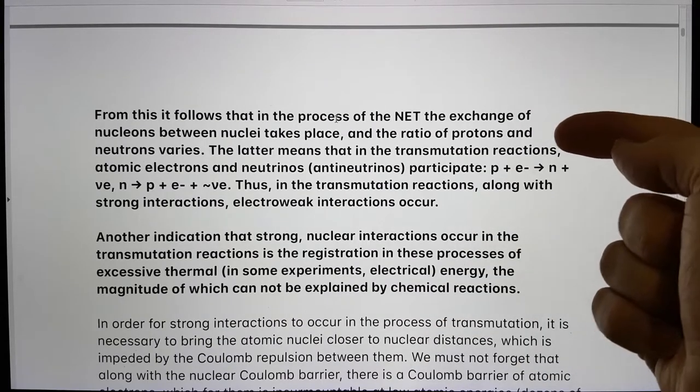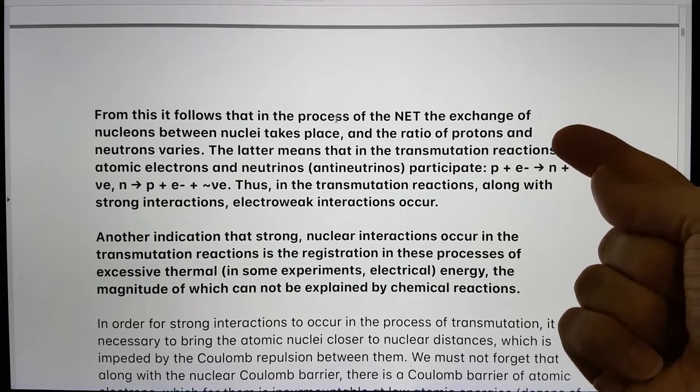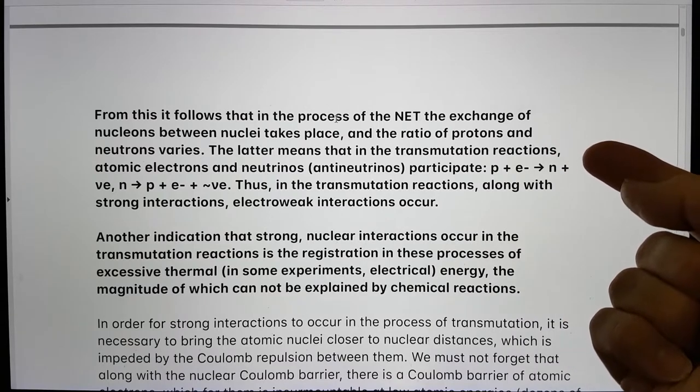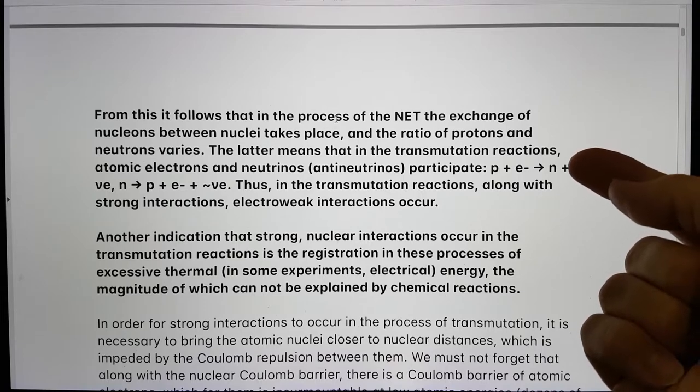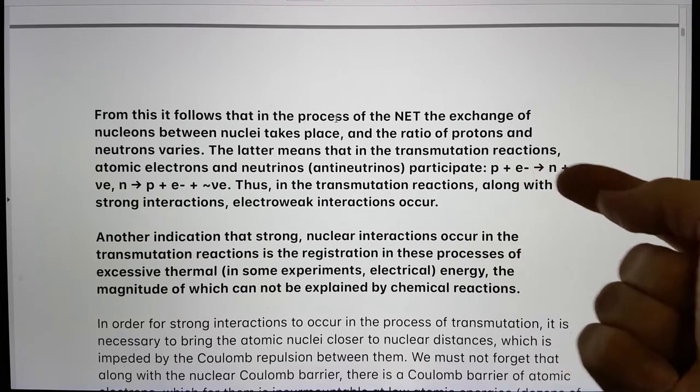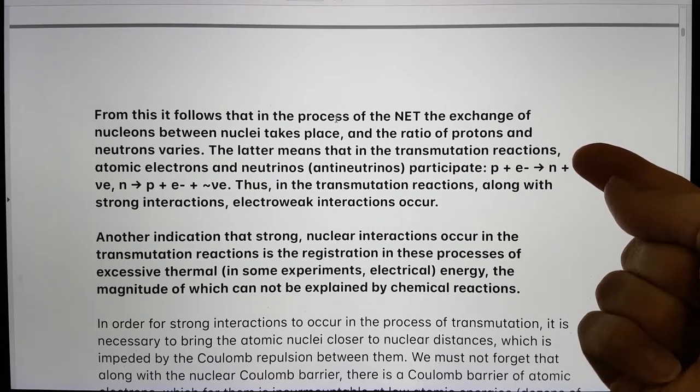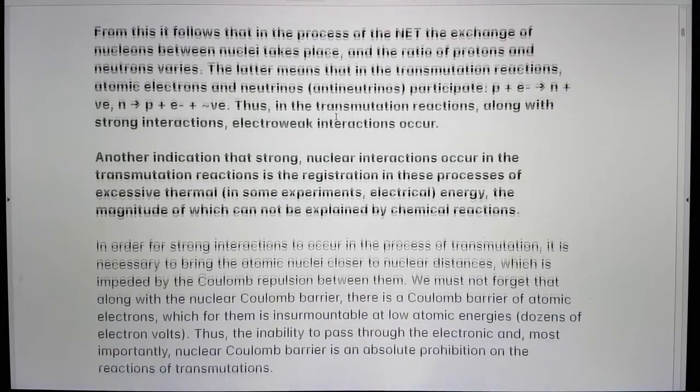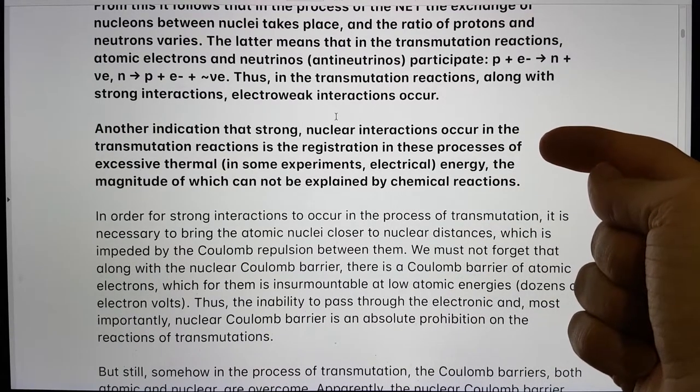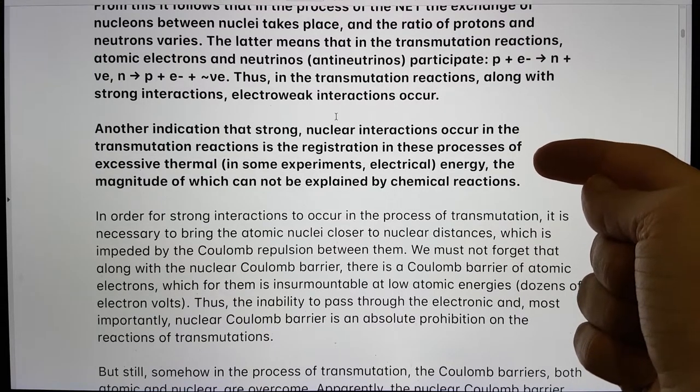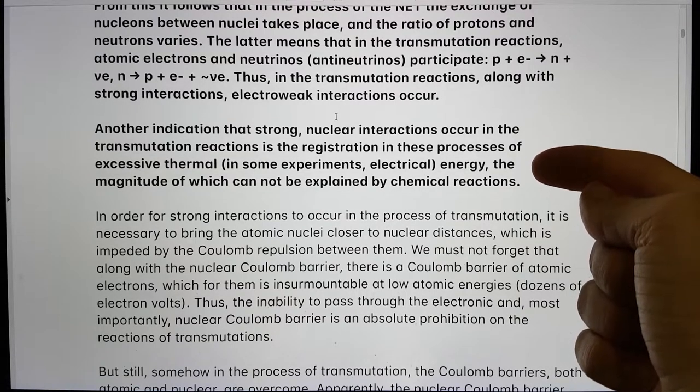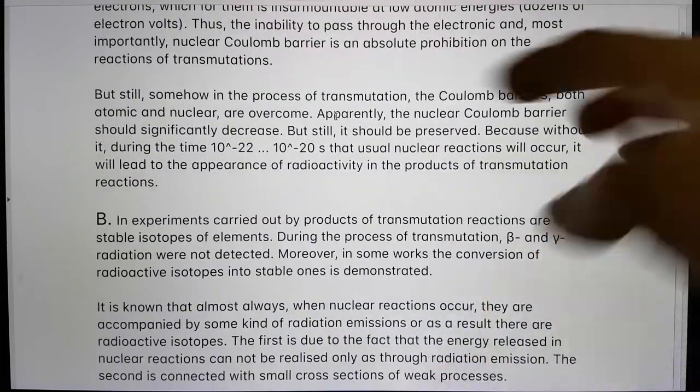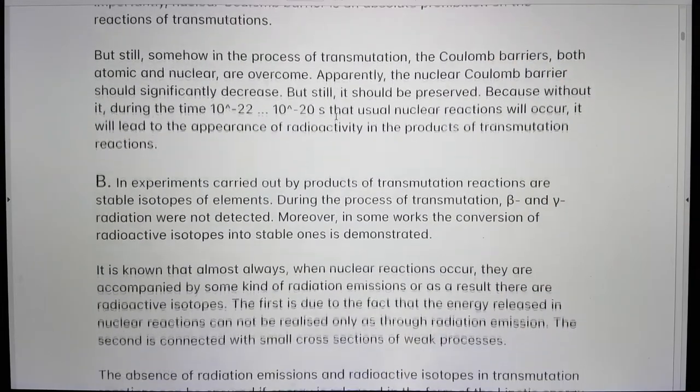From this, it follows that in the process of NET, low-energy transmutation reactions, the exchange of nucleons between nuclei takes place and the ratio of protons and neutrons varies. The latter means that in the transmutation reactions atomic electrons and neutrinos, antineutrinos participate. So you're getting conversion of protons to neutrons and neutrons to protons. Thus, in transmutation reactions along with strong interactions electroweak interactions occur. Another indication that strong nuclear interactions occur in the transmutation reactions is the registration in these processes of excessive thermal energy. In some experiments, electrical energy, the magnitude of which cannot be explained by chemical reactions.